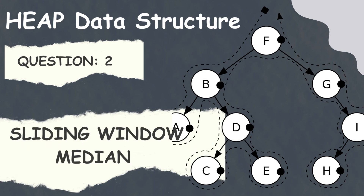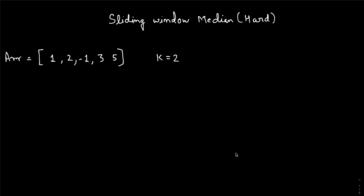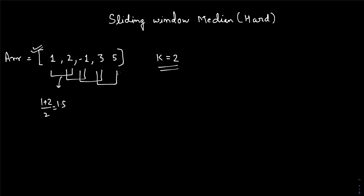Hello everyone, welcome to my new video. Today we are going to solve another question related to heaps. The question name is 'Sliding Window Median'. In this question, you have to find the median of all the subarrays of size k in the given array. For a subarray of size 2, the median is going to be 1 plus 2 divided by 2, which is 1.5. Similarly, we have to find all the medians of size 2.